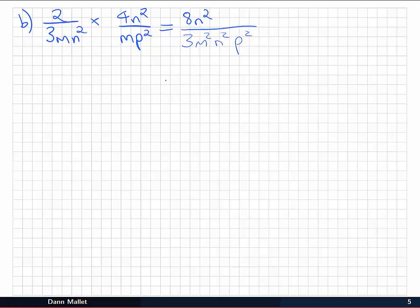But now we should just check to see if we've got anything in common that we can cancel. Eight and three there's nothing to do. But n² will cancel with n². And we're left with 8 over 3m²p². And that's our multiplied out fraction.